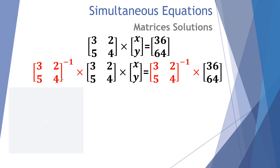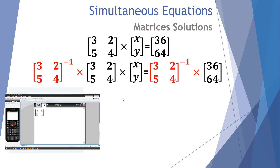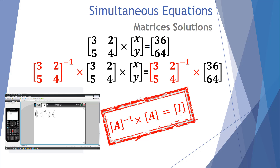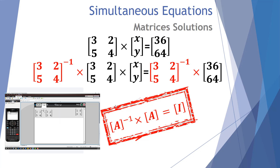We'll start with the same matrix. If we multiply both sides by the inverse of the coefficient matrix — 3, 2, 5, 4 — we've multiplied by the inverse on the left-hand side, and the same on the right-hand side of the equals sign. Let's look at this using our TI CAS calculator. We substitute our values for the inverse matrix and multiply: A to the negative one multiplied by A gives the identity matrix. When you multiply any matrix by its inverse, you will get the identity matrix.